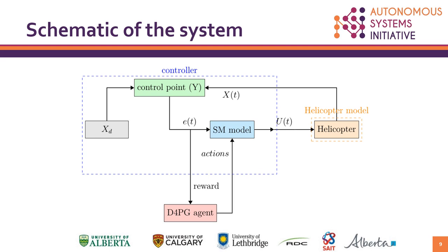In order to control the helicopter using the sliding mode controller, we have to define some parameters, which include the convergence rate, the bound on f — which is the input-independent part of the equations — and also the input-dependent part of the equations, which is delta theta, and also the surface reach time, and also the control point position and the distance between the center of gravity and the control point.